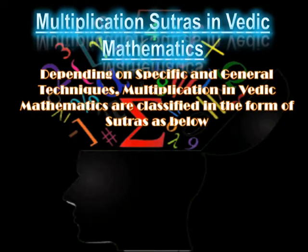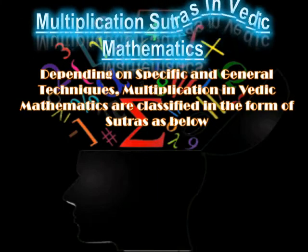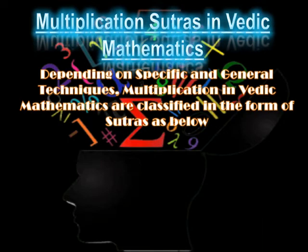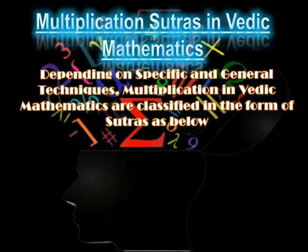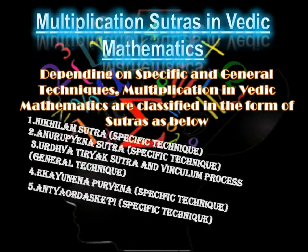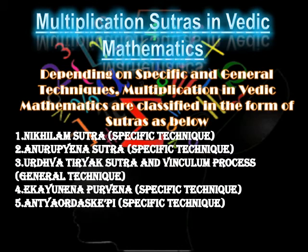The multiplication sutras in Vedic mathematics are five. The specific techniques include: Nikhilam Sutra, Anurupena Sutra, Ekadhikena Purvena, and Antyayordashake'pi. The general techniques include Urdhva Tiryagbhyam and the Vinculum process. Multiplication sutras in Vedic mathematics are five in total.